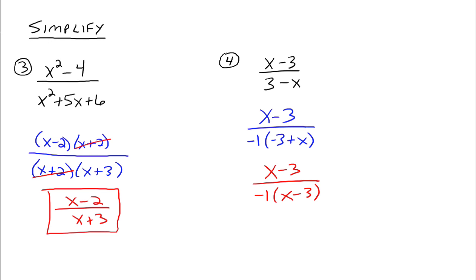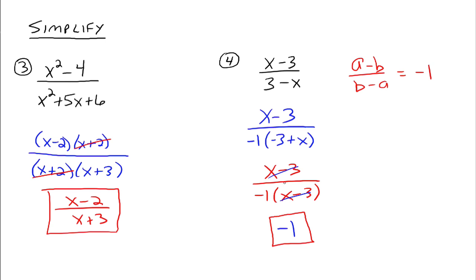The x minus 3's divide out, leaving behind negative 1. So x minus 3 divided by 3 minus x simplifies to negative 1. This is because x minus 3 and 3 minus x are opposites. In fact, whenever you see a minus b divided by b minus a, that will always equal negative 1. The main concept: completely factor the numerator, completely factor the denominator, then divide out any factors common to both. Study well, and please let me know if you have any questions.